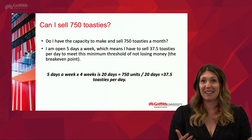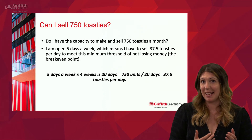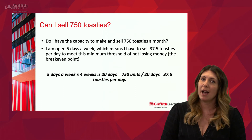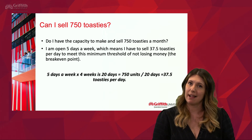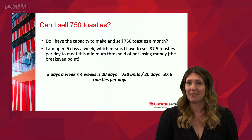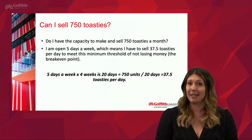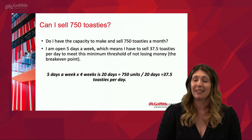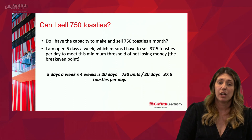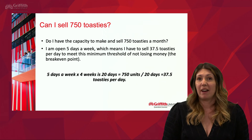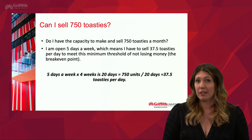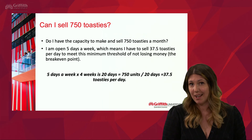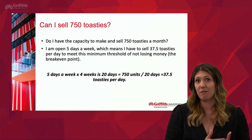Continuing with a capacity plan — if I can actually sell these units, I have to ask myself: do I have the capacity to make and sell 750 toasties a month as the bare minimum? At that point I'm not even making money yet — that's just to break even. Let's say I'm open five days a week, which means about 20 days per month. From the breakeven analysis, I need to sell 750 units, so 750 divided by 20 equals 37.5 toasties per day.